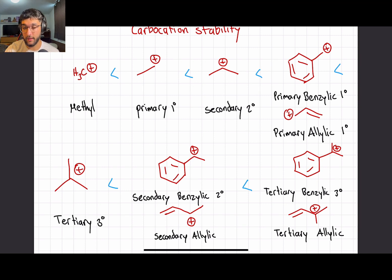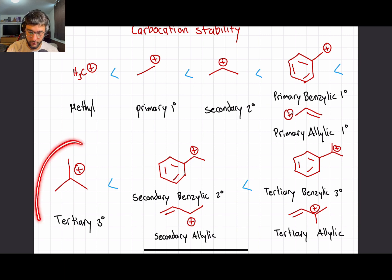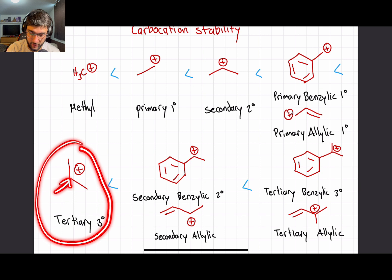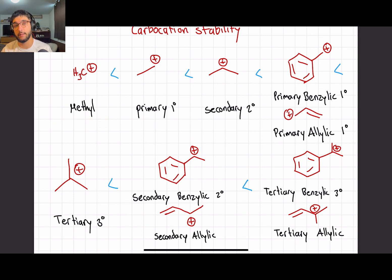If we have multiple electron-donating groups, we can spread the charge out even more. Secondary carbocations have two carbons donating, primary has one, and tertiary has three carbons donating electron density to the positive charge — neutralizing it further than secondary or primary. Methyl is the least stable carbocation simply because it has no carbons donating any electron density.